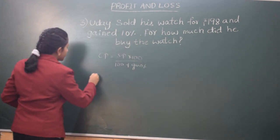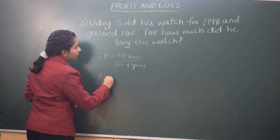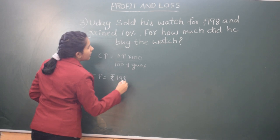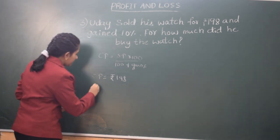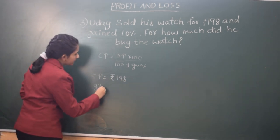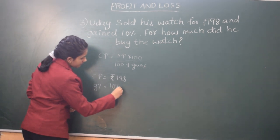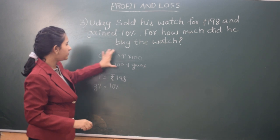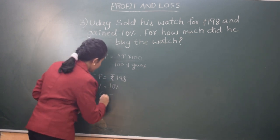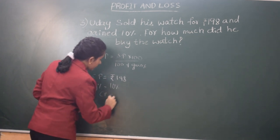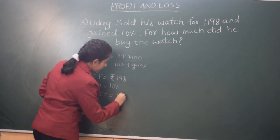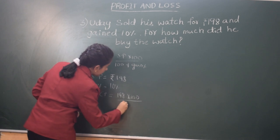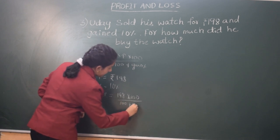We have the selling price that is Rs.198 and we have the gain percentage that is 10%. We should apply these values in the formula. Cost price is equal to selling price Rs.198 into 100 divided by 100 plus 10%.